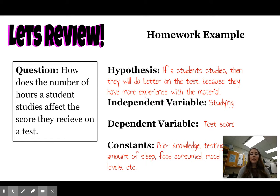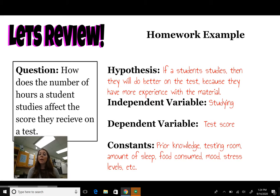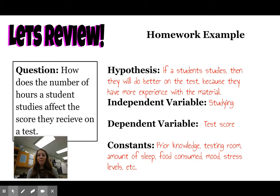Let's go over these answers. The hypothesis: if a student studies, then they will do better on the test, because they have more experience with the material — more repetition with the content. The independent variable — what was being changed — is the studying. The dependent variable is the test score. Some constants would be prior knowledge, doing the testing in the same room, trying to get everyone the same amount of sleep, amount of food consumed, mood, and stress levels. There are a lot of constants you'd want to control in this type of experiment.